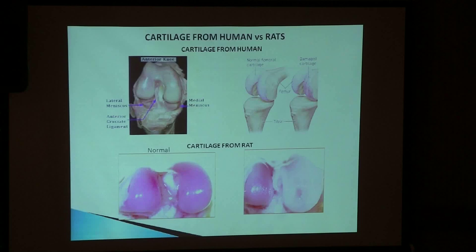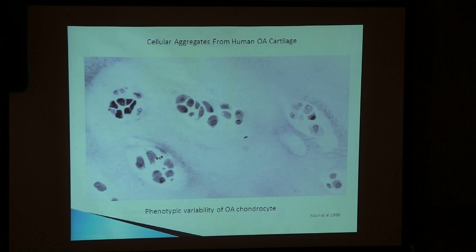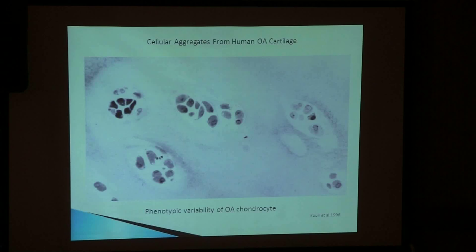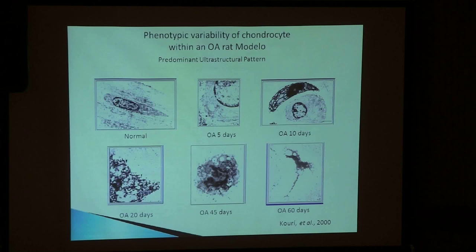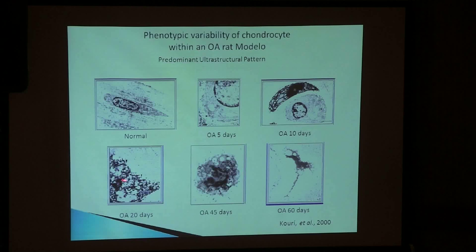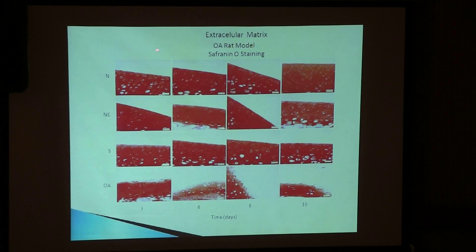One of the things that surprised us was that in human osteoarthritis — published in 1996 — we saw a great variability of cells. These cells were different from each other. So we asked: how can we determine which cells appear according to the stage of the process? In our model, we determined that in normal cells this is the main cell type. Five days after induction, the cells start to round up and contract. They develop the endoplasmic reticulum and Golgi apparatus. Then at 20 days they start to contract further, and at the end they explode.